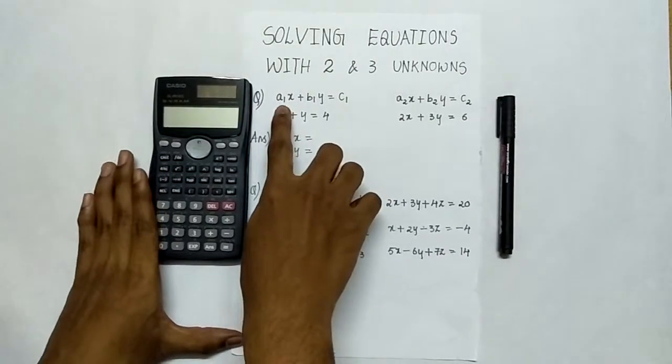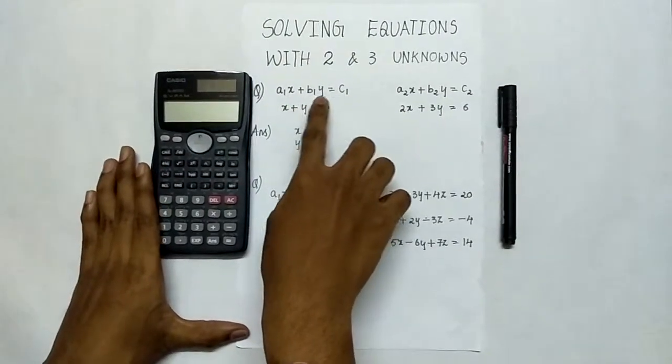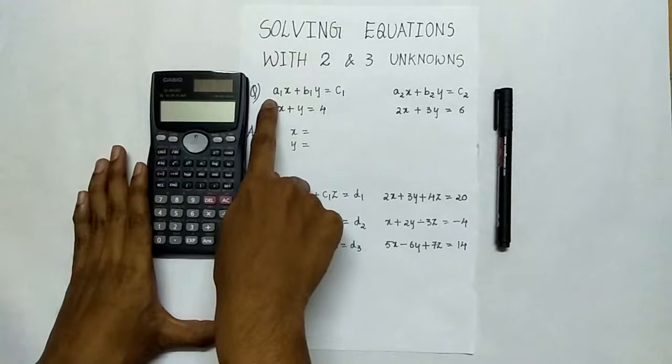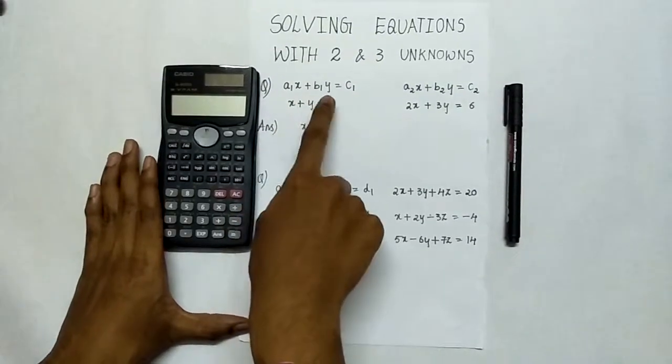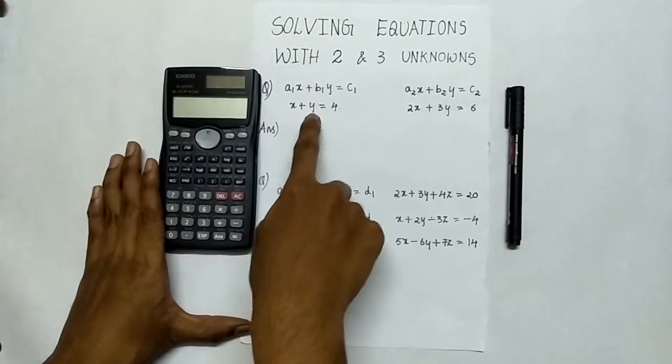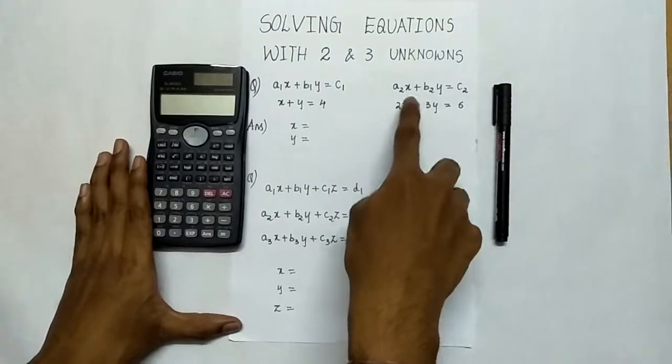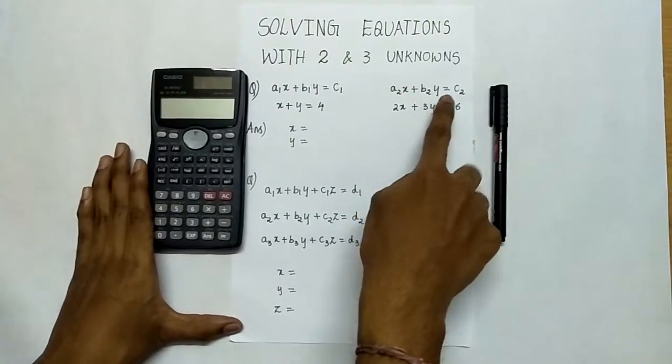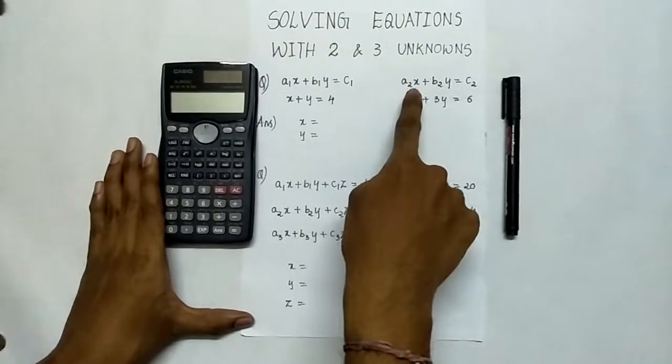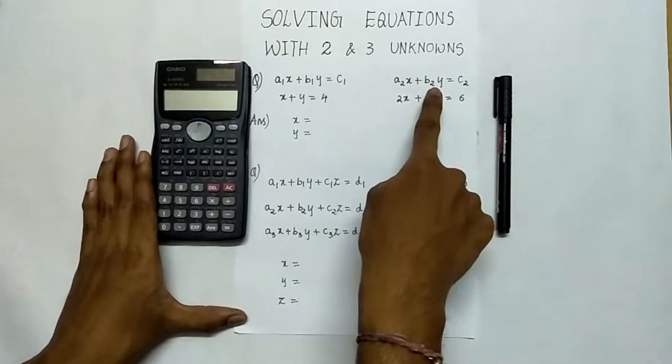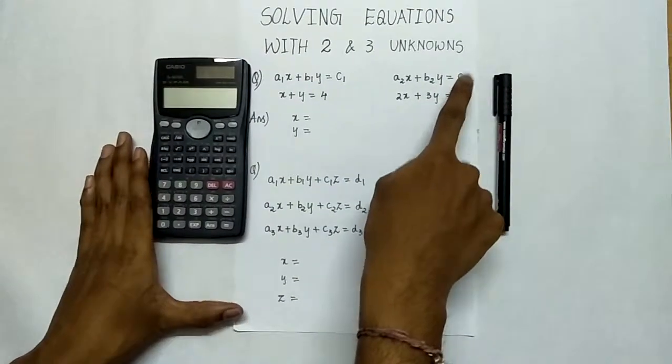Here we see the pattern a1x plus b1y is equal to c1, where a1 is the coefficient of x, b1 is the coefficient of y. Similarly, the second equation we have a2x plus b2y is equal to c2, where a2 is coefficient of x and b2 is coefficient of y and c2 is the constant.